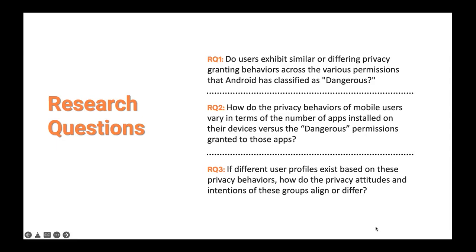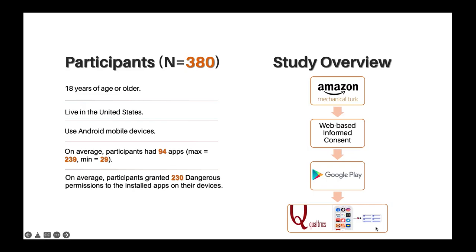In order to understand these research questions, we conducted a study where we recruited participants through Amazon Mechanical Turk. The participants were directed to a web-based informed consent which had important details about what data would be collected from their mobile devices. Then, they were directed to Google Play to download our study app. In the app, participants were asked to complete a survey for privacy attitudes and intentions, while in the background the app scraped the Android device application manifest.